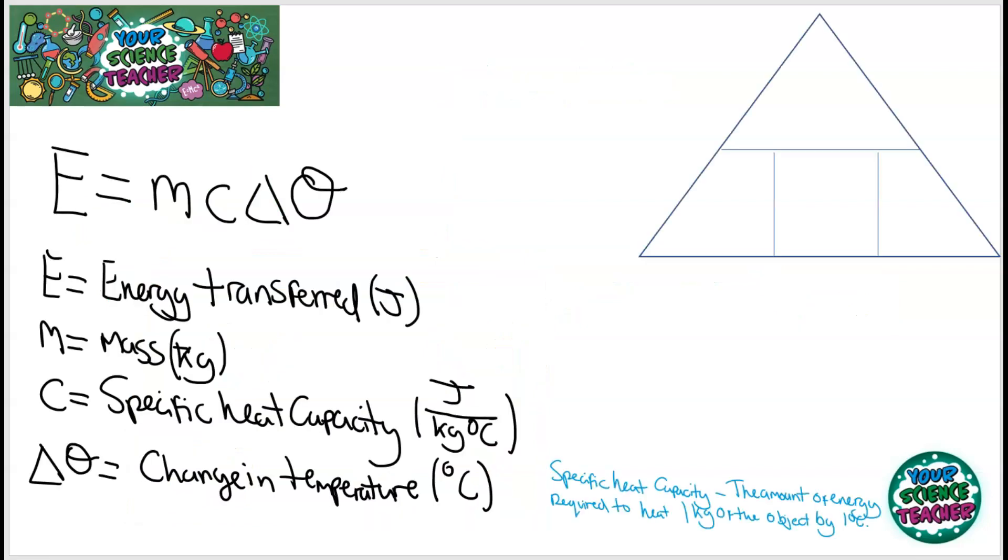If we wanted to talk about the conductivity of different materials, often we talk about specific heat capacity, which is the amount of energy required to heat one kilogram of that object by one degree centigrade.